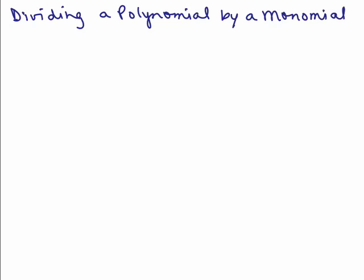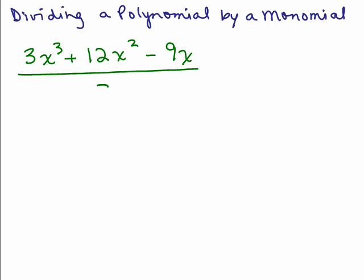In this video, we're going to go over how to divide a polynomial by a monomial. A monomial is a single term. So for example, you might have something like 3x cubed plus 12x squared minus 9x divided by 3x. The numerator is a polynomial — it's got more than one term, it happens to be a trinomial. But in the denominator there's only a single term, 3x, so this would be a monomial.